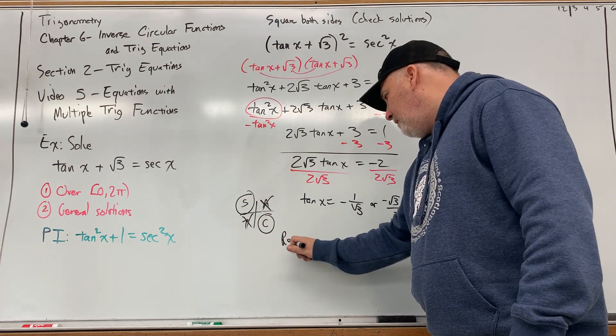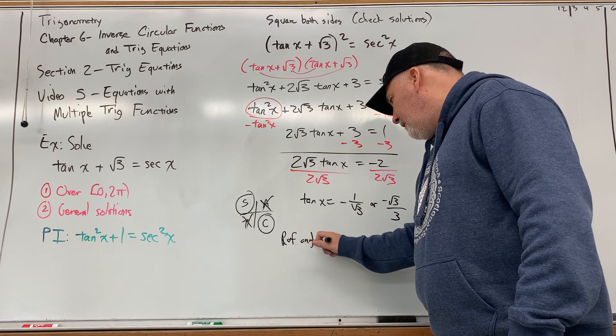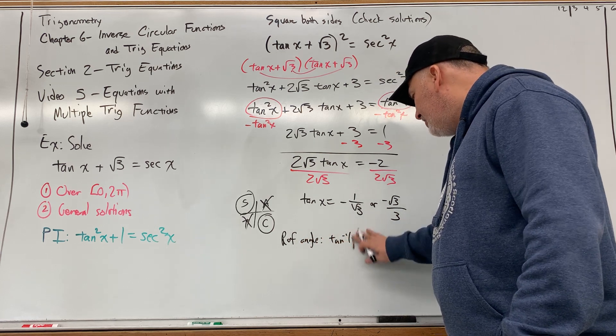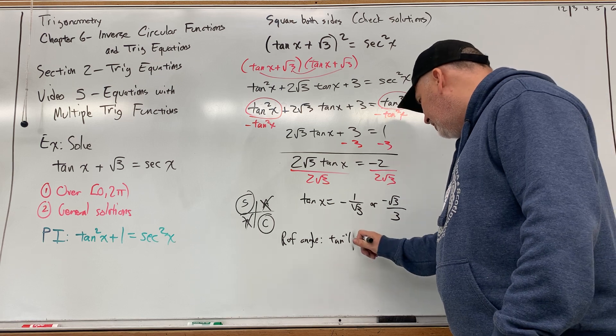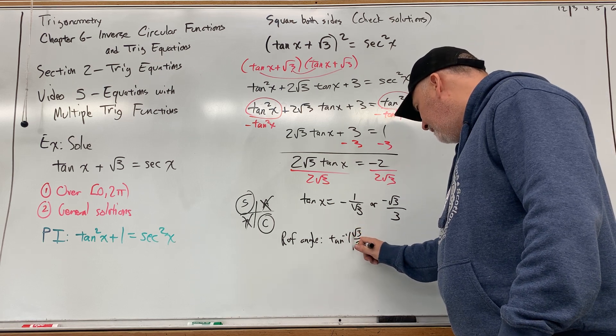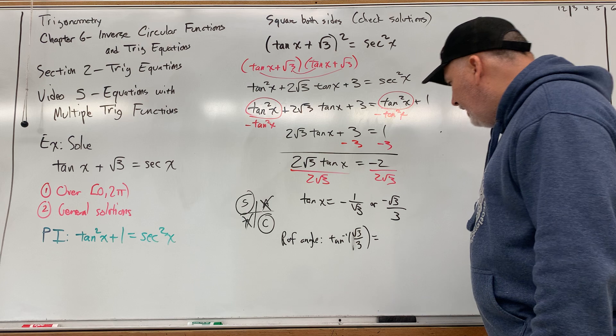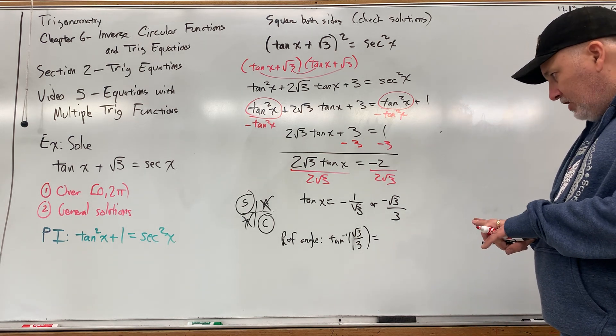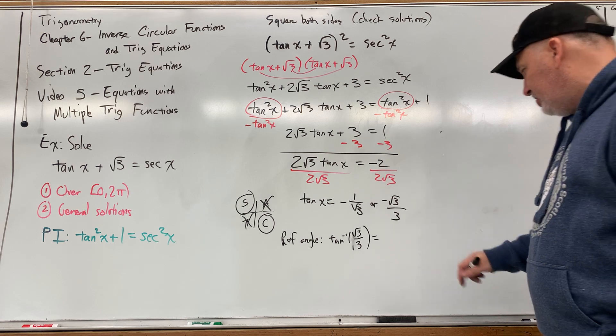And to find the reference angle, we do inverse tangent of the absolute value of this. We'll use square root of 3 over 3. We can use either one. And tangent the inverse of that guy is, since I break out my triangle, looks like it's going to be pi over 6.